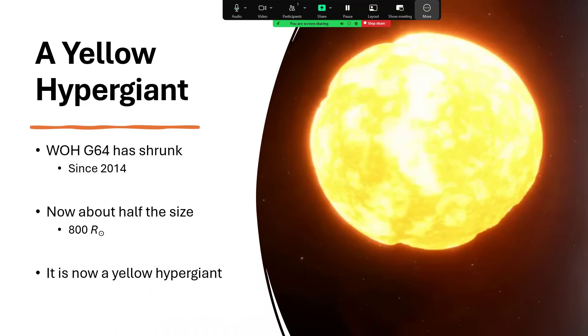And we think it has shrunk as well. Size has reduced from about 1700 times the radius of the sun down to about half that, 800. And so now what we're looking at is a yellow hypergiant. This is very unusual. We just don't get the chance to catch in modern times stars moving from one spectral class to another.